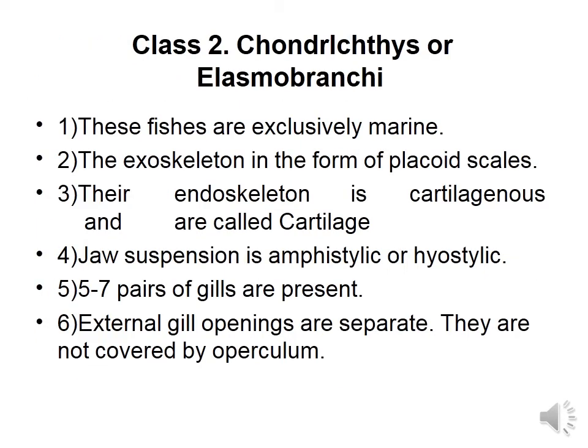Class 2 is Chondrichthyes. These fishes are exclusively marine. The exoskeleton is in the form of placoid scales embedded in the skin, making the surface rough. The endoskeleton is cartilaginous — hence called cartilaginous fishes or Chondrichthyes. Jaw suspension is amphistylic or hyostylic. There are 5 to 7 pairs of gills with separate external gill openings not covered by operculum — operculum is absent in Chondrichthyes.